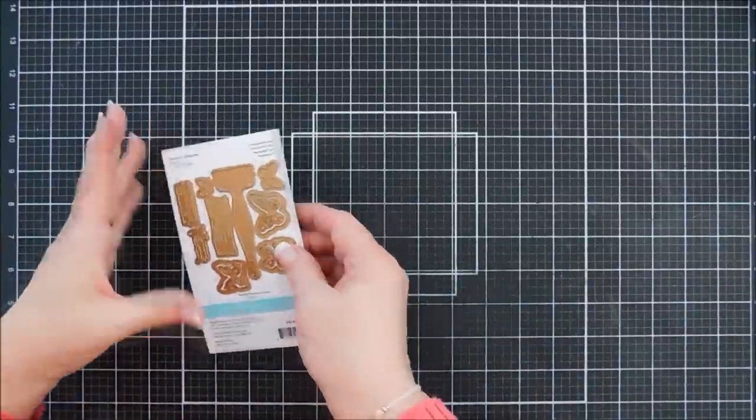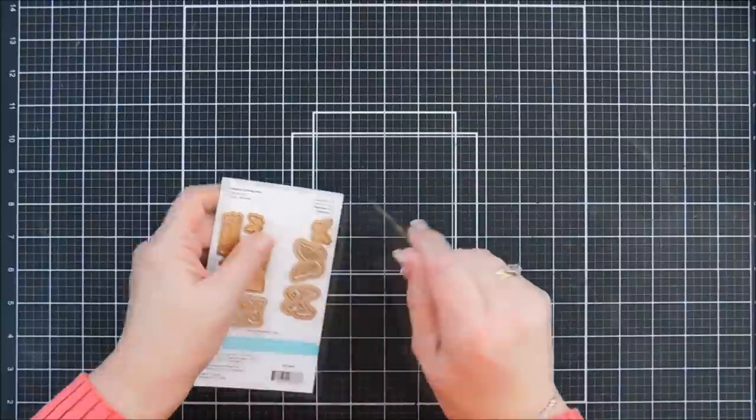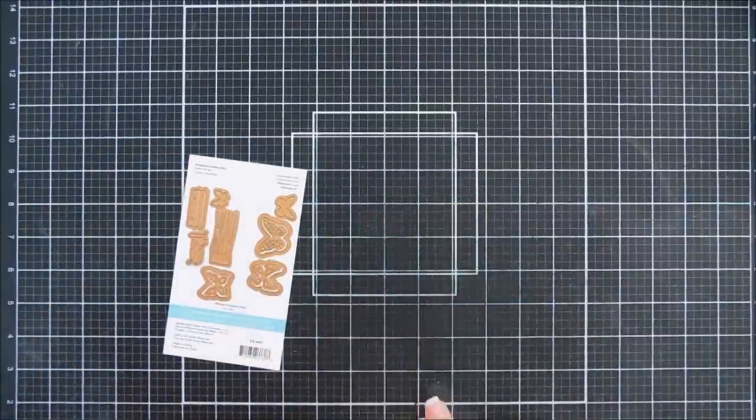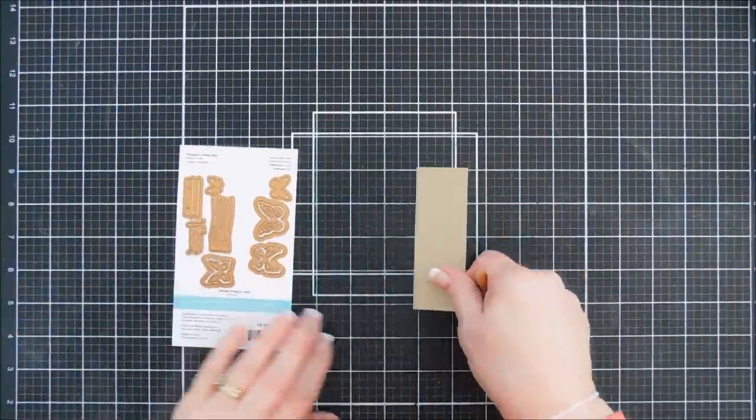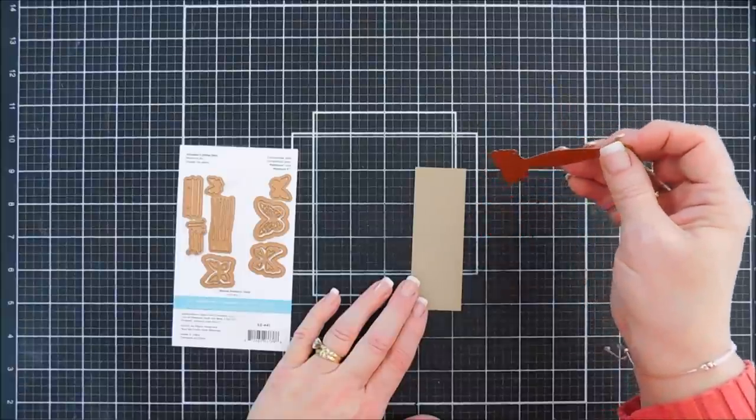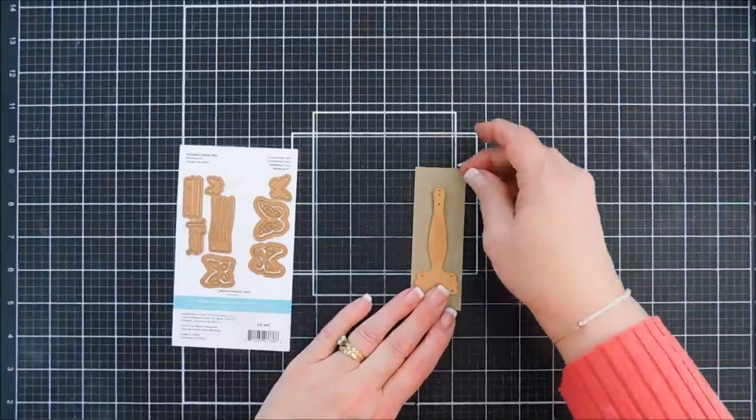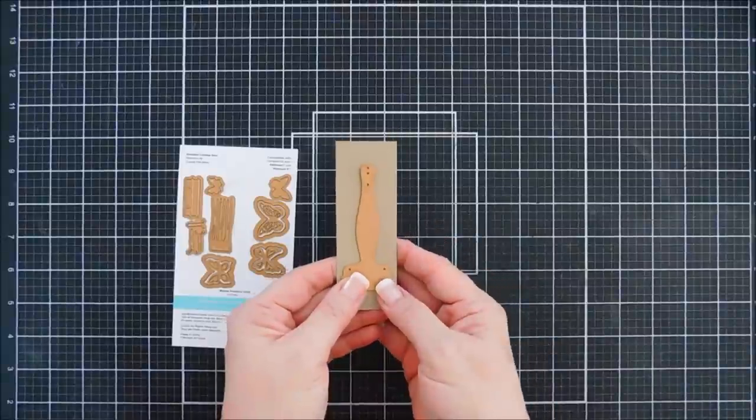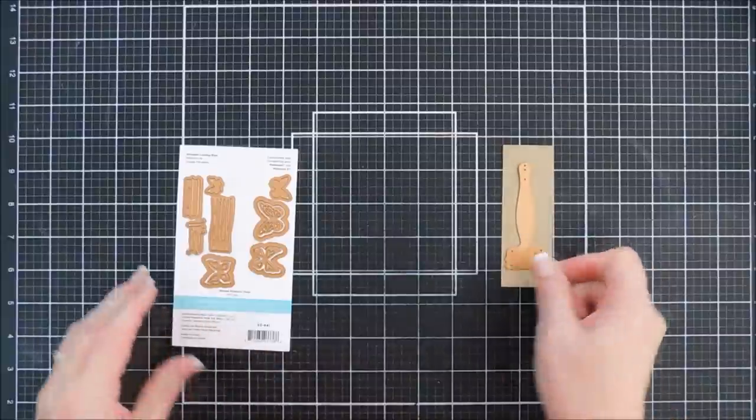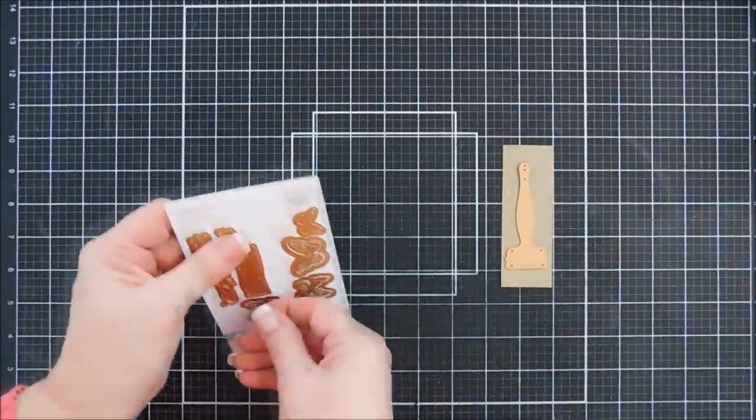First, what we're going to do is a little bit of die cutting. I have some Portobello cardstock, it's like a craft color, and I'm going to die cut out the handle of my paintbrush with this. And then there's also the bristles.